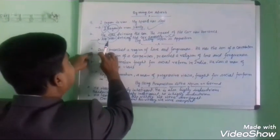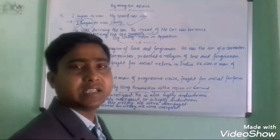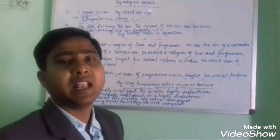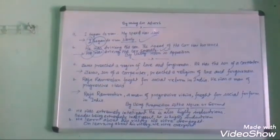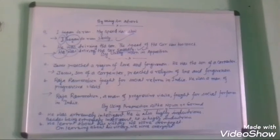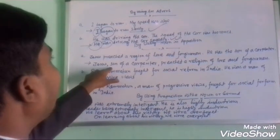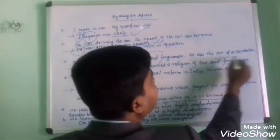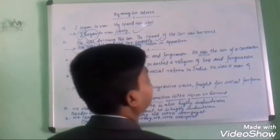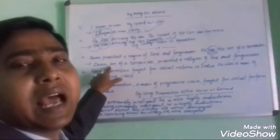For example: 'Jesus preached a religion of love and forgiveness. He was the son of a carpenter.' In the second sentence, 'was' is the verb, and this verb is omitted by the use of a comma — giving us 'Jesus, son of a carpenter.' This technique is called apposition.